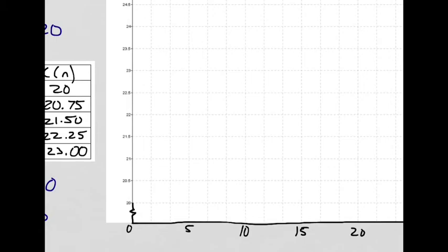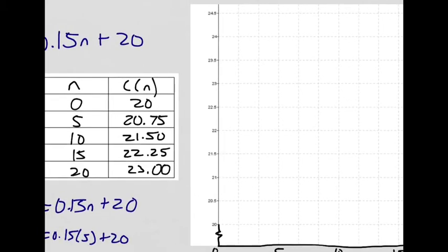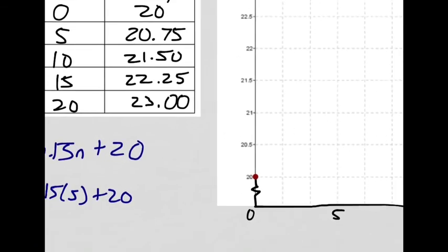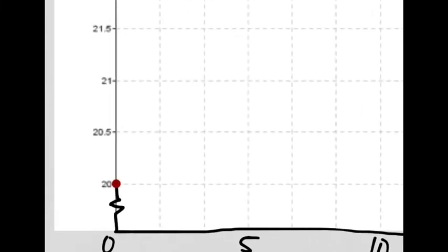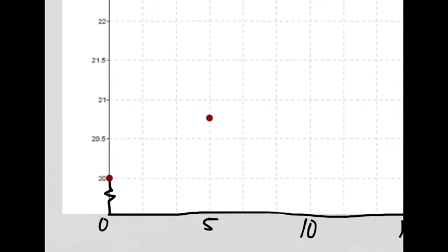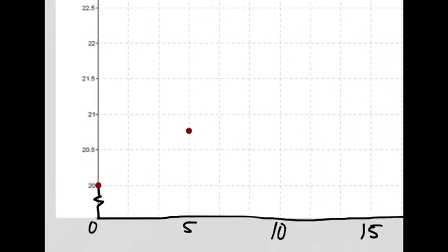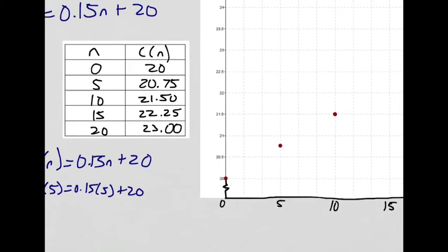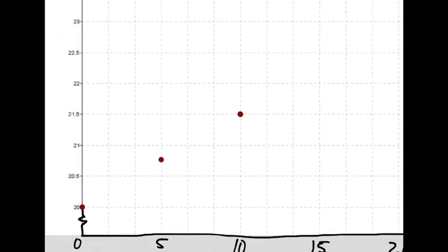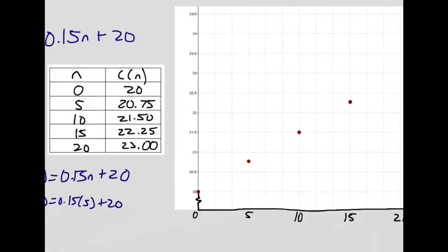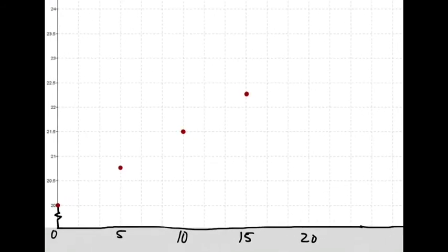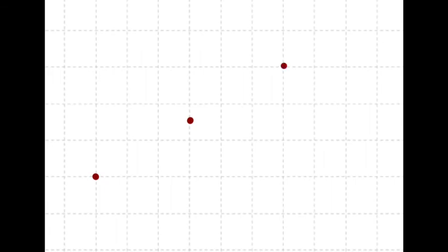Now I plot those points. I'm just going to plot them in red. So the first one is 0, 20, that goes here. And then 5 and 20.75, so that would be 5 over and halfway between 20.5 and 21. And then 21.5 at n equals 10, that would be there. 15 and 22.25, that would be here. And lastly, 20 and 23, that would be there.